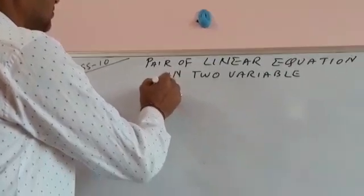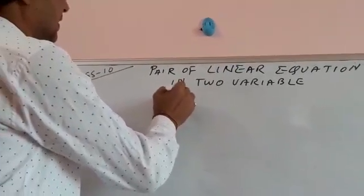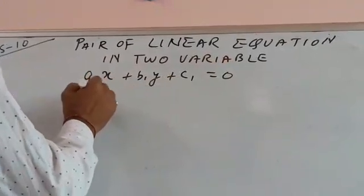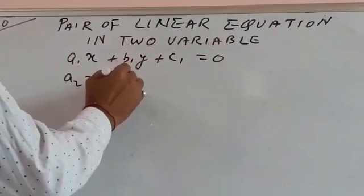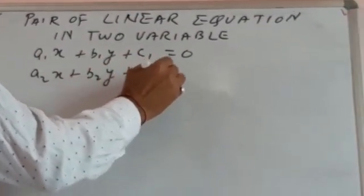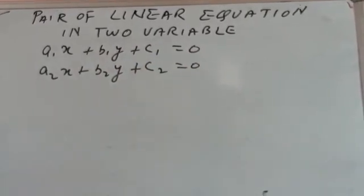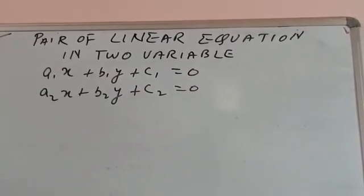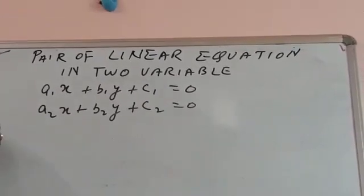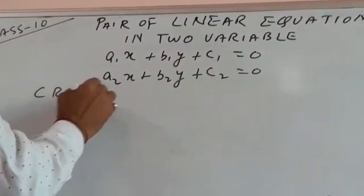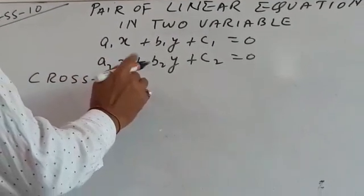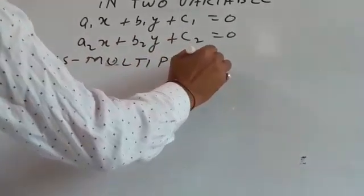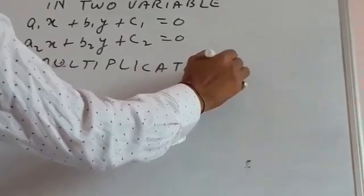The general form is: a1x + b1y + c1 = 0 and a2x + b2y + c2 = 0. Now, one more method is the cross multiplication method — as its name suggests, this is the cross multiplication method.